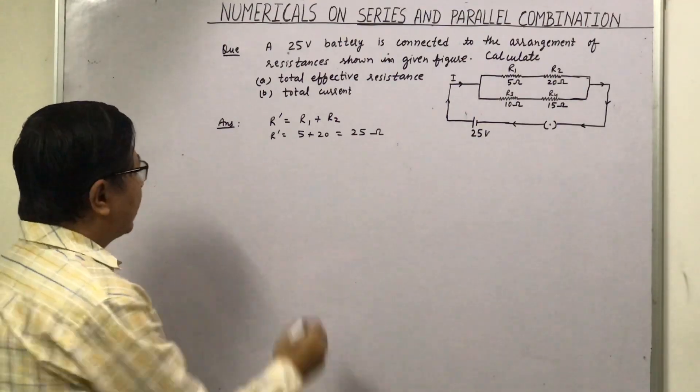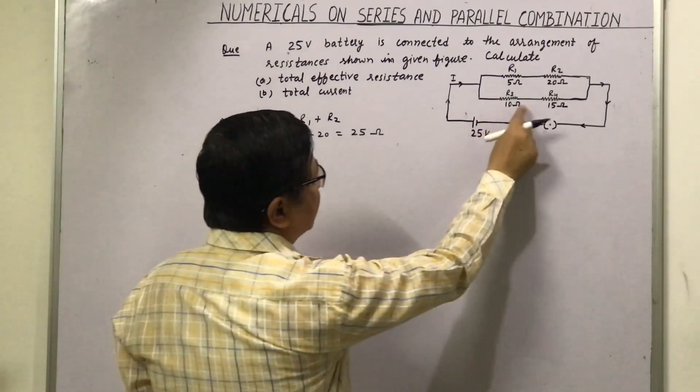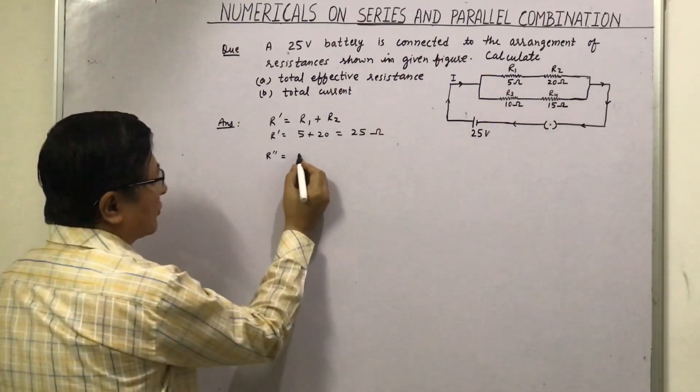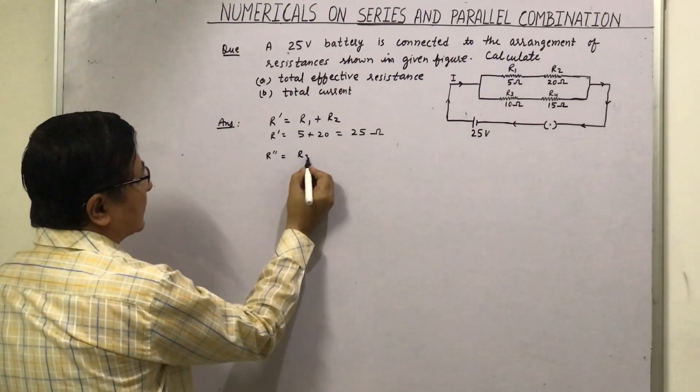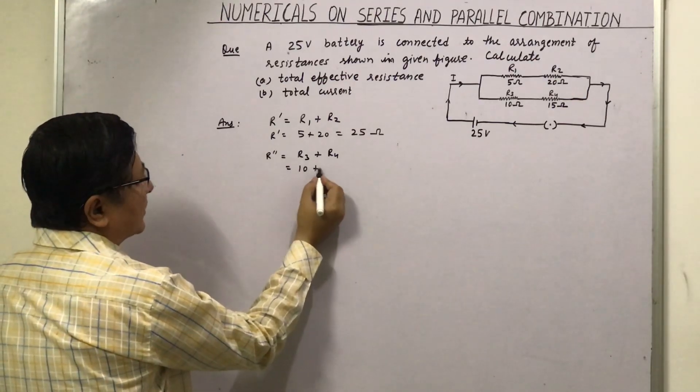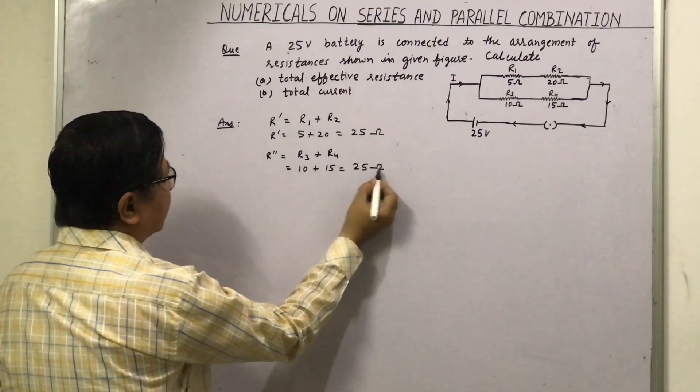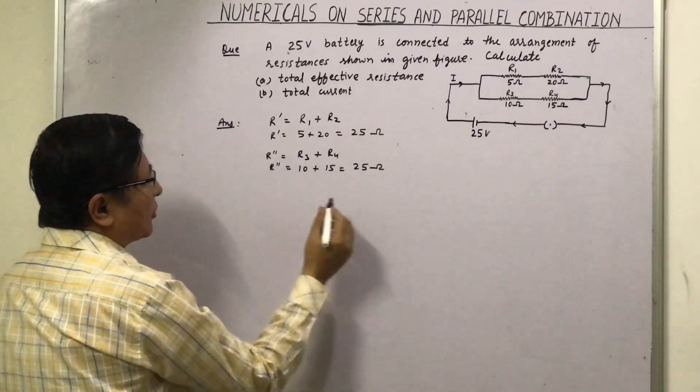Now we will find R double dash. So that is R3 and R4. These are also connected in series. So R3 plus R4 will be equal to 10 ohm plus 15 ohm, and that is equal to 25 ohm again. So now these two combinations.